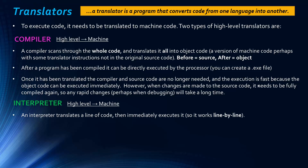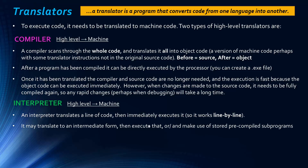An interpreter also converts from high level to machine code, but it translates line by line. It translates a line of code and then immediately executes it. The compiler produces object code that is then executed, whereas an interpreter does it line by line so you get an immediate response. It may translate to an intermediate form or make use of pre-compiled sub-programs to save time, so the line between compilers and interpreters isn't always entirely clear cut.